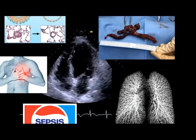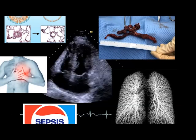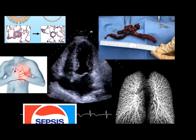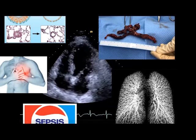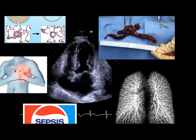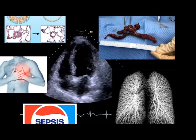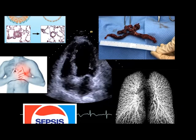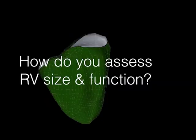What causes right heart impairment? It can be pulmonary hypertension, pulmonary emboli, mechanical ventilation, infection, arrhythmias, or ischaemia. There are lots of reasons why someone can have an impaired right ventricle.